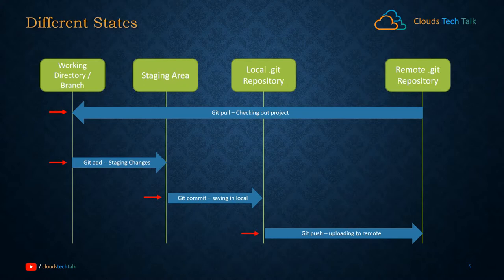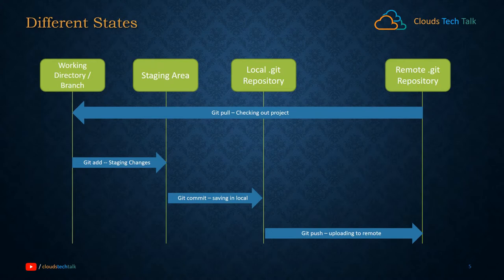So the four states are: working directory, staging area (after git add), local repository (after commit — changes are saved permanently), and remote repository (after git push). The remote repository can be hosted on a cloud server or an on-premise system.